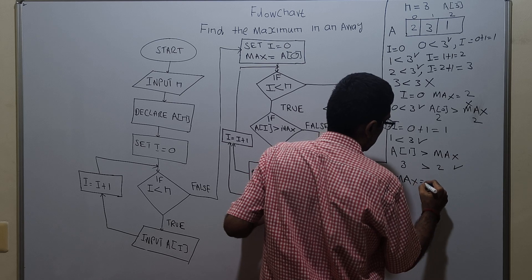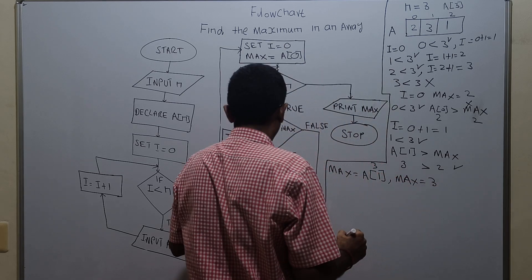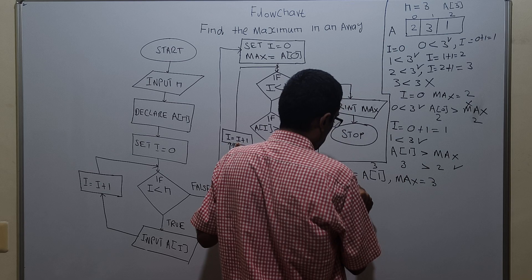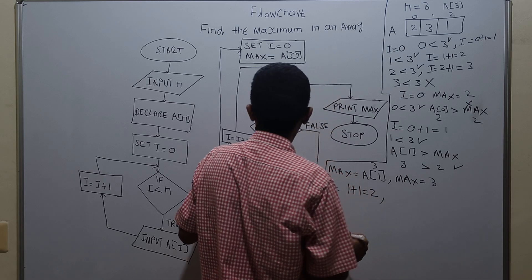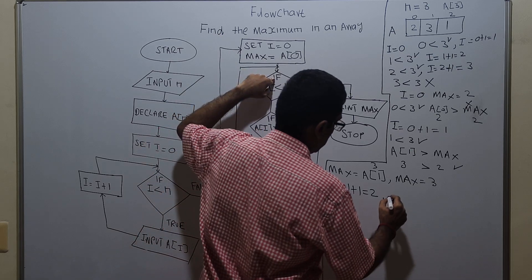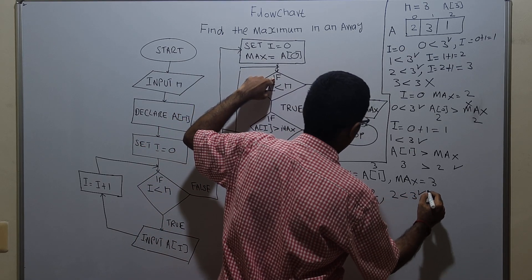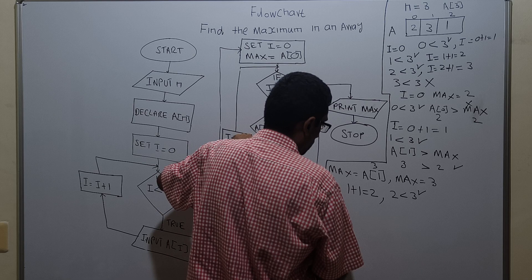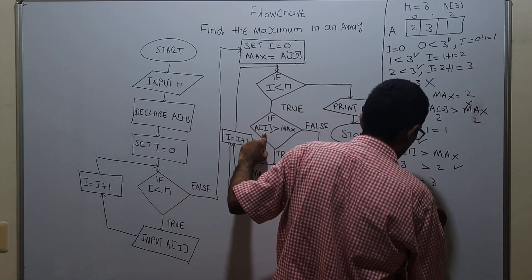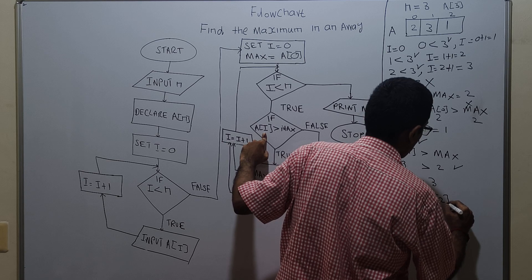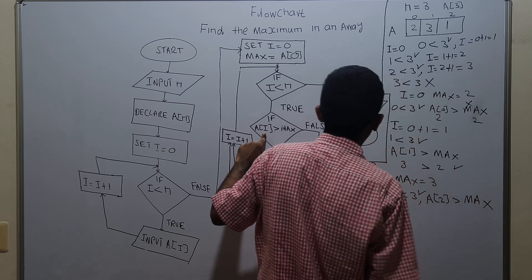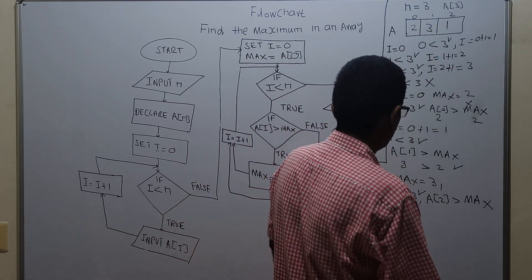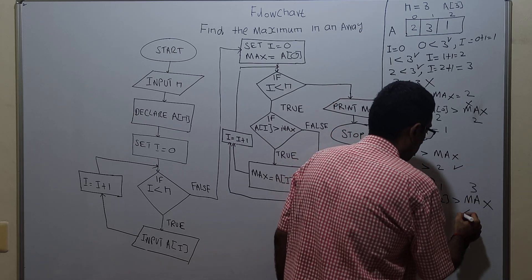In such a case, max equal to a of i — it assigns max equal to a of 1, which has value 3. So max equals 3 now. Incrementing i by 1: i equals 1 plus 1 which is 2. Check i less than n: 2 less than 3, which is also true. Check a of i greater than max: a of 2 value is 1, max is 3 — 1 greater than 3 is false.